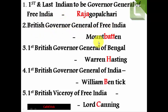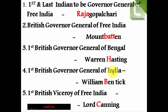First British Governor General of free India was Lord Mountbatten. First British Governor General of Bengal was Warren Hastings. First British Governor General of India was William Bentinck. First British Viceroy of free India was Lord Canning.